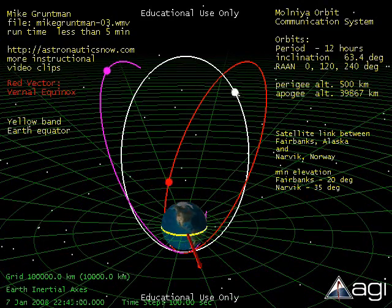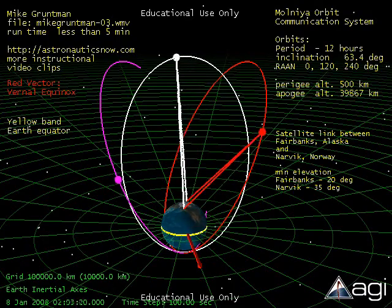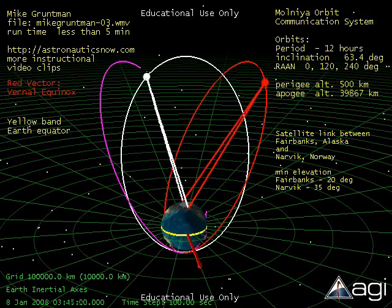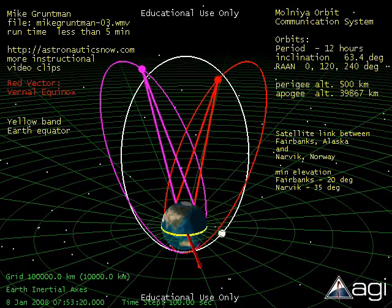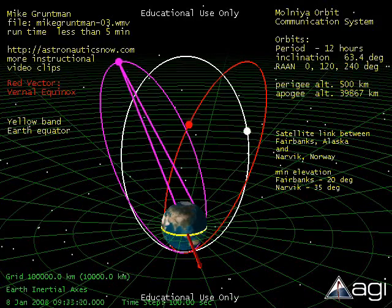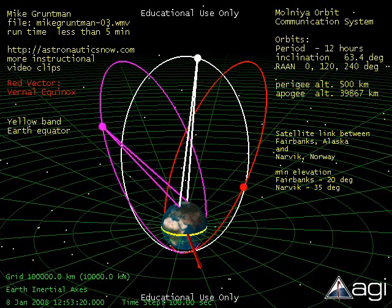The communication link requires simultaneous visibility of both points on the ground from a satellite, constrained by minimal elevation angles of the ground points. One Molniya satellite would provide the link only for several hours during the day.